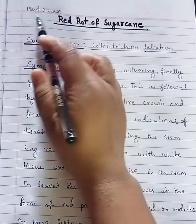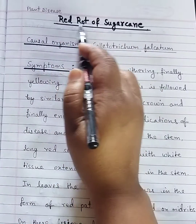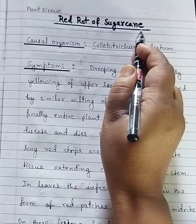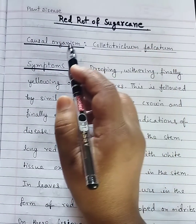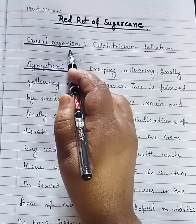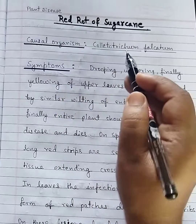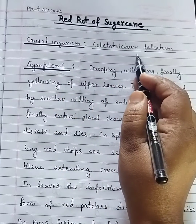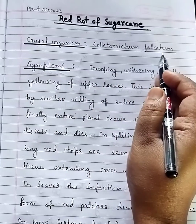Plant disease: red rot of sugarcane. The causal organism is Colletotrichum falcatum.